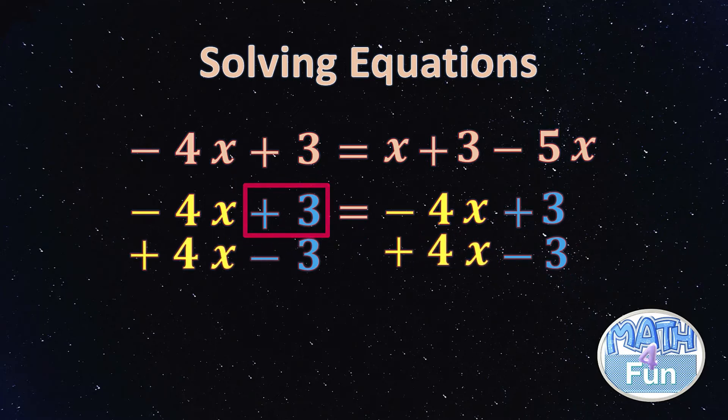Also, we can add +4x on each side to remove the negative 4x. Here we're planning to move x to one side and the numbers to the other side. But look what would happen.